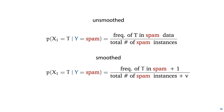Where before we divided the frequency of an observation by the total number of observations, we now add 1 to that frequency in the numerator everywhere, and correct the denominator by adding v — the number of possible values the feature can take. In practice, especially with small data, we don't add 1 but reduce the weight of the pseudo observations. For instance, giving each pseudo observation a weight of 0.01 means the numerator adds 0.001 and the denominator adds 0.001 times v.